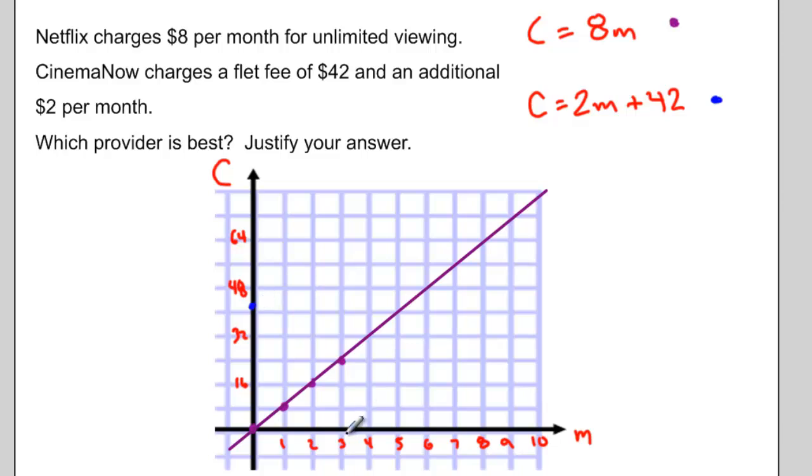If it goes up $2 every month, then after three months I'm paying $48. So again, drawing a line through those two points would look something like that.